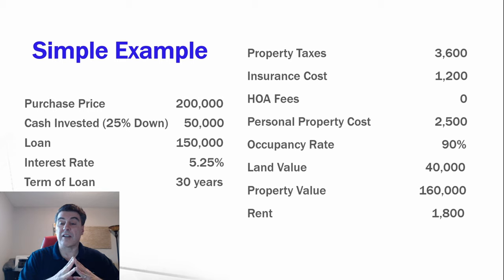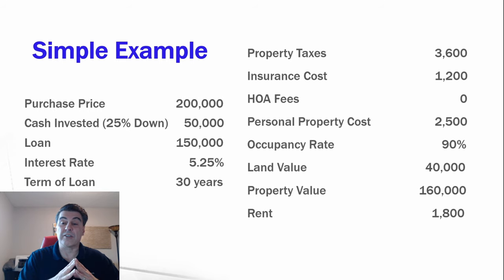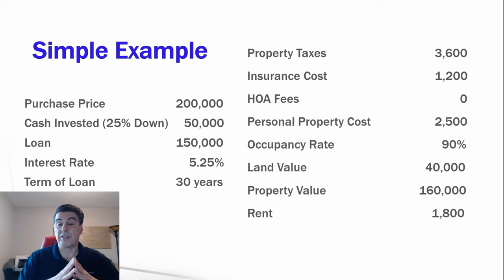Personal property — appliances — are valued at $2,500. We have an occupancy rate of 90% with a 10% vacancy rate. The land is valued at $40,000 and the depreciable property value is $160,000, with monthly rent of $1,800.